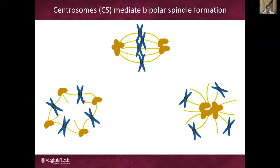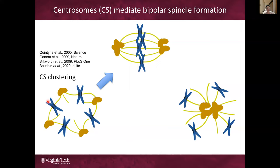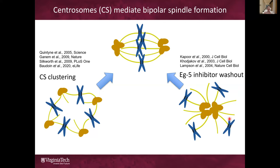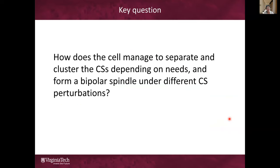However, the cell has very robust mechanisms to rescue itself from these aberrancies. In the case of extra centrosomes, given enough time, the centrosomes can often cluster into two poles and allow the cell to divide bipolarly. This process has received a lot of attention because it's implicated in chromosome instability and cancer development. Meanwhile, for a monopolar spindle caused by Eg5 inhibitor, after the drug is washed out, the spindle can also spring back to bipolarity. So our key question is: how does the cell manage to separate or cluster the centrosomes depending on what it needs and form a bipolar spindle under different centrosome perturbations?